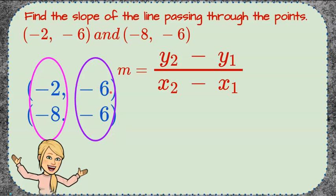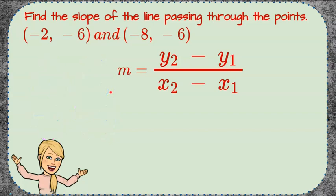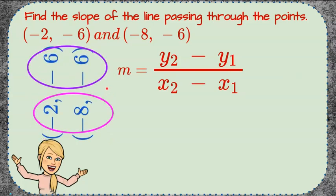So here's our trick. We're either going to turn our head or turn our papers and we're going to rearrange our ordered pair so it looks just like the slope ratio.